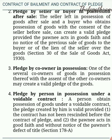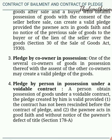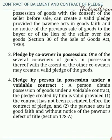Fourth, pledge by person in possession under voidable contract: A person who obtained possession of goods under a voidable contract — the pledge created by him is valid provided: First, the contract has not been rescinded before the contract of pledge; and Second, the pawnee acts in good faith and without notice of the pawner's defect of title. Section 178A.